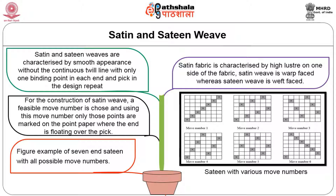For a seven-end repeat with move number 1, the first interlacement is placed, and the second end is one move right and one move up — this produces a diagonal twill, not a true satin. With move number 2, each successive interlacement is two moves to the right and one up, so there is only one interlacement per thread and no prominent diagonal lines, producing a valid satin weave. With move number 3, the move is three to the right and one up for each successive interlacement, again producing only one interlacement per warp end with no diagonal line.